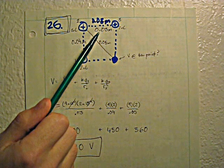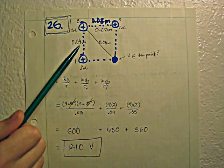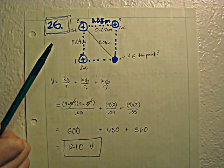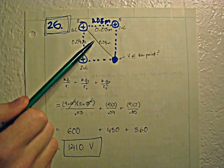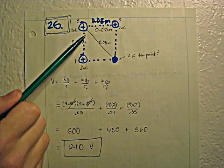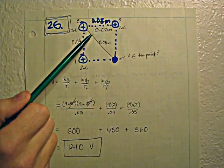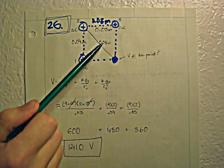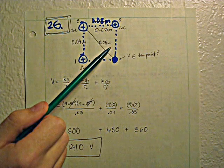This distance right here is 0.03 meters. This is 0.04 meters. And then later in the problem you're going to want to know this distance right here. If you just remember the 3-4-5 right triangle, then it's 0.05 meters.